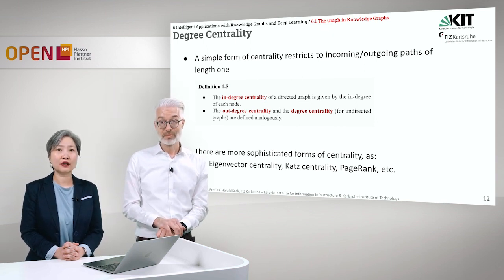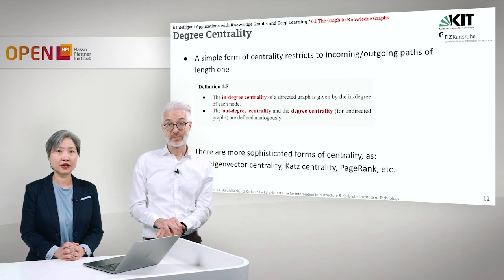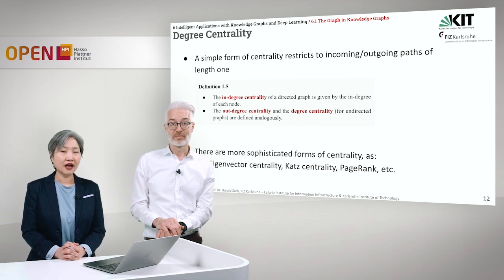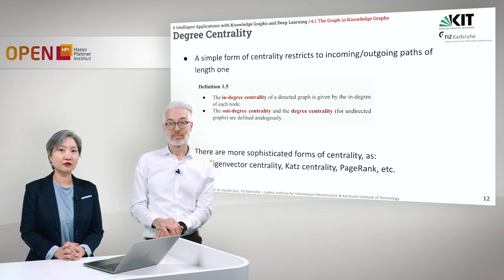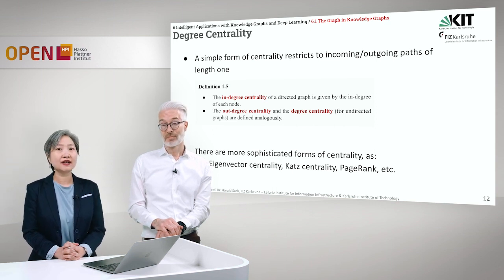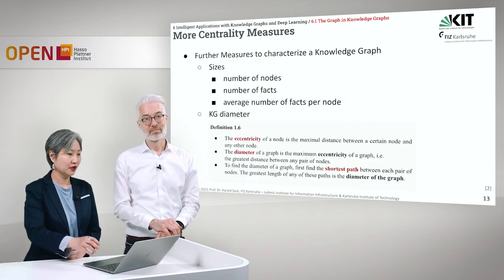Another way to find important nodes is degree centrality. Degree centrality restricts to incoming and outgoing paths of length one. The in-degree centrality of a directed graph is given by its in-degree, while in an undirected graph the out-degree centrality and degree centrality are the same. There are more sophisticated centrality measures, such as eigenvector centrality, KATZ centrality, and PageRank, which was proposed by Google.